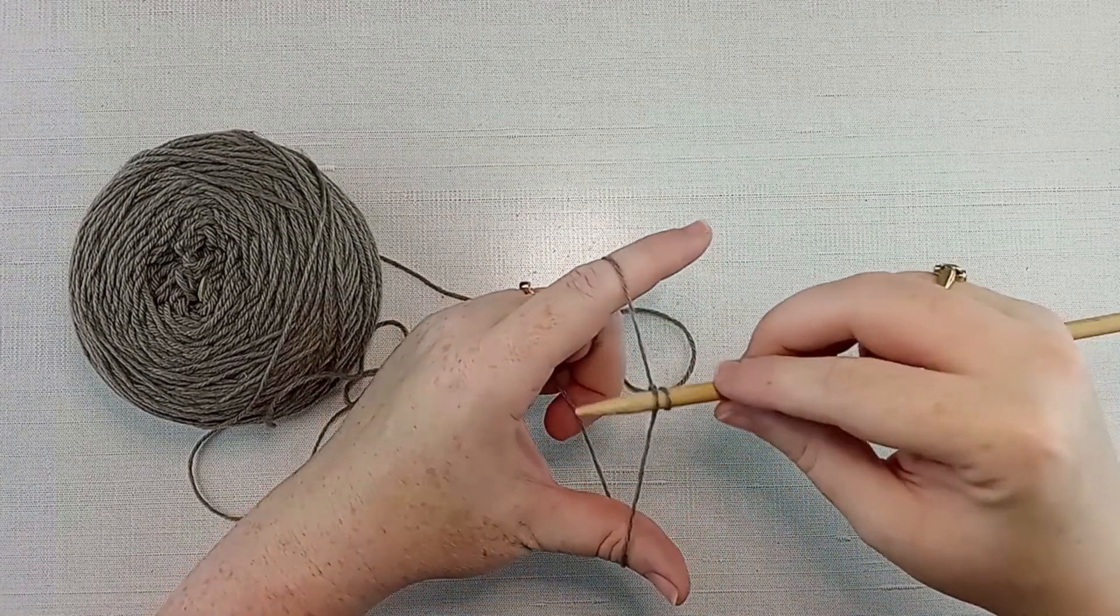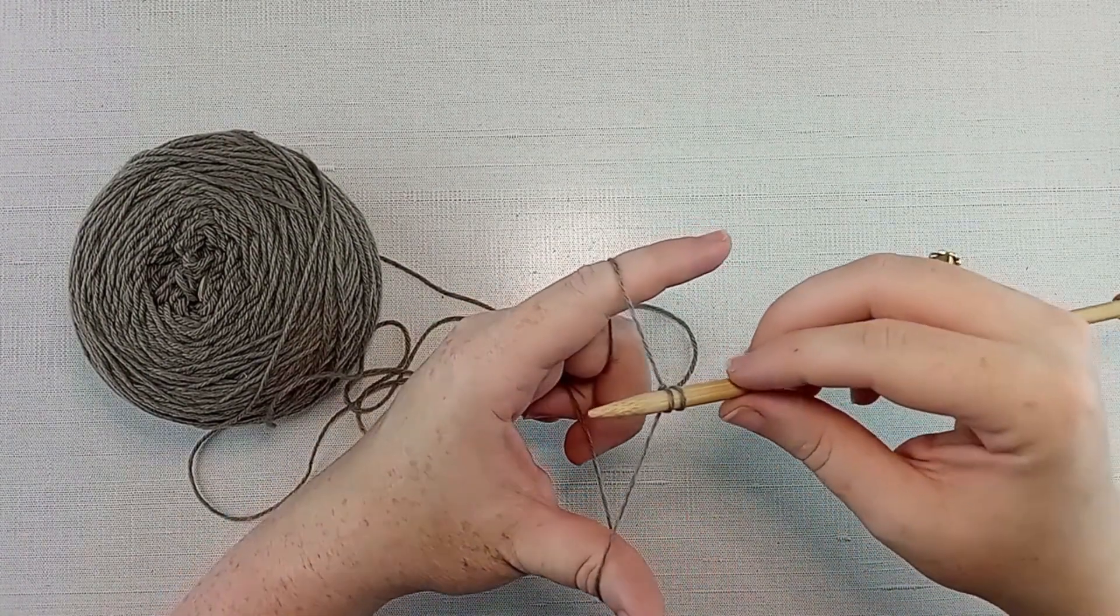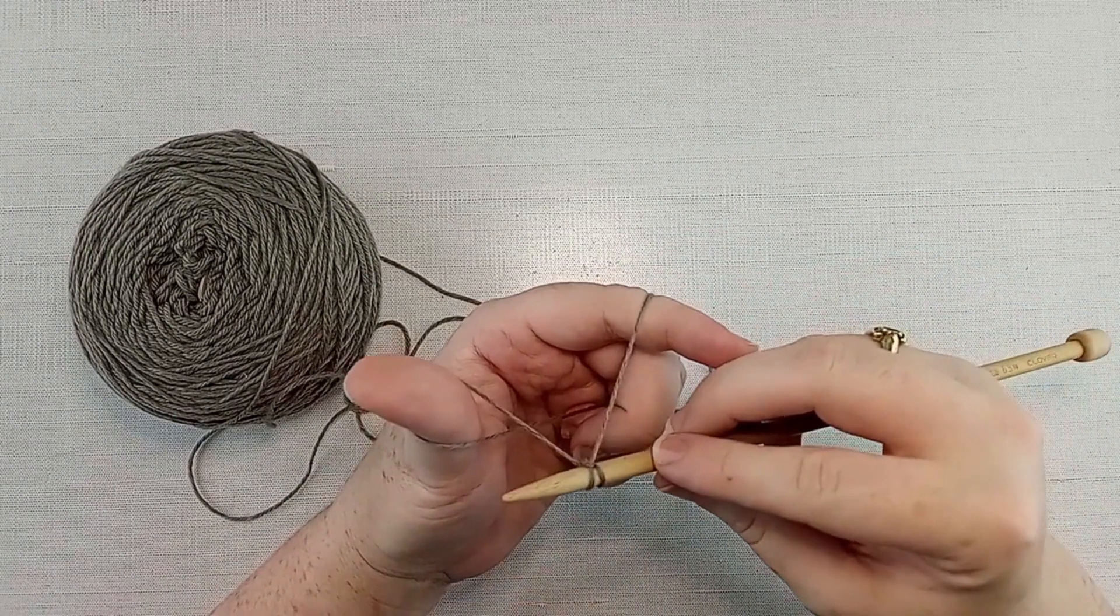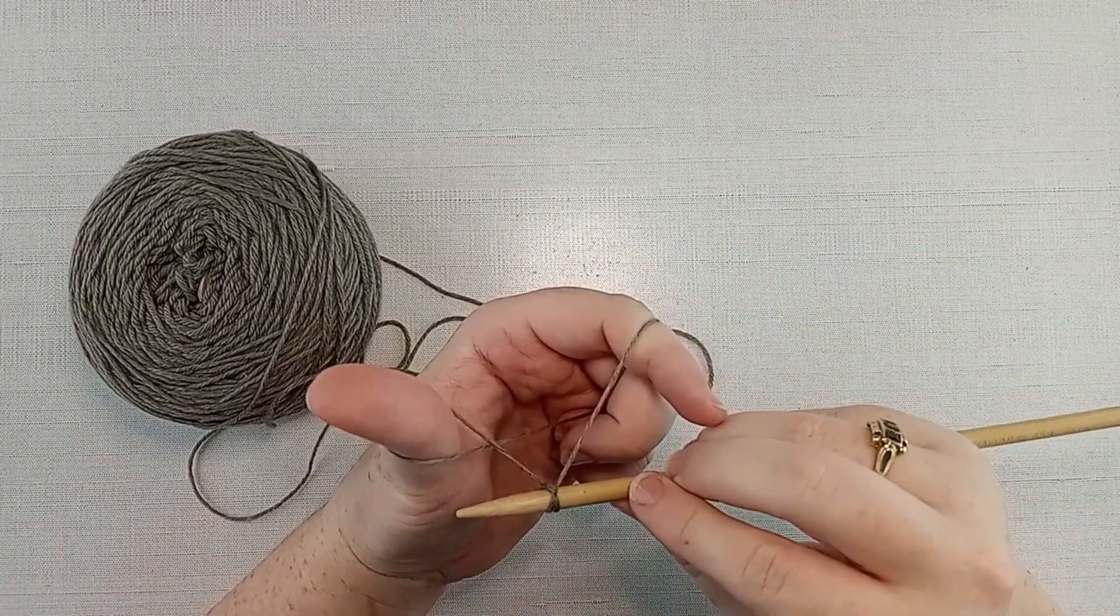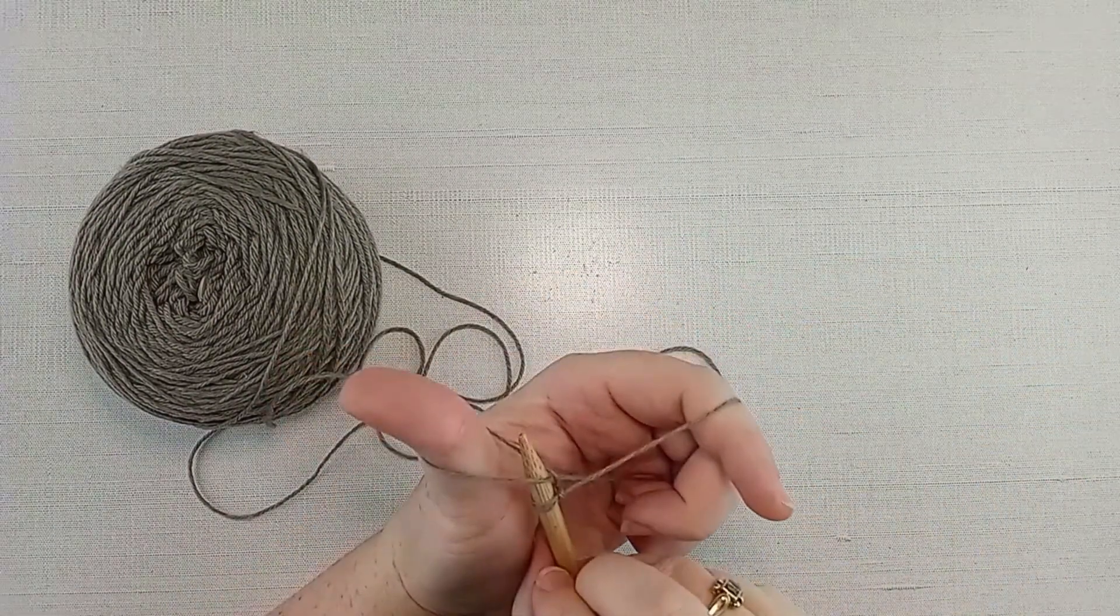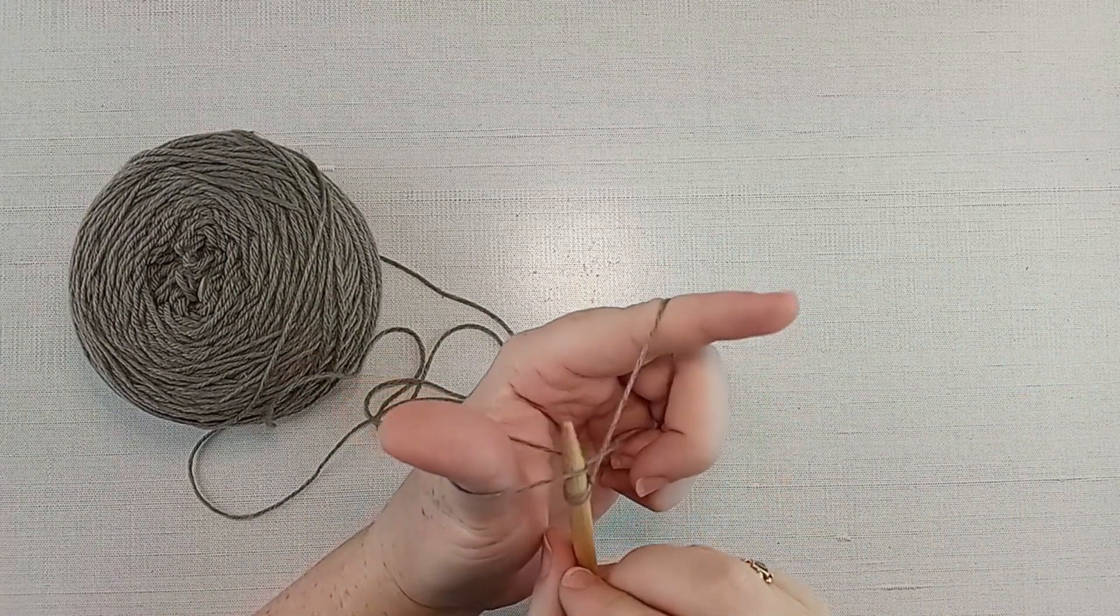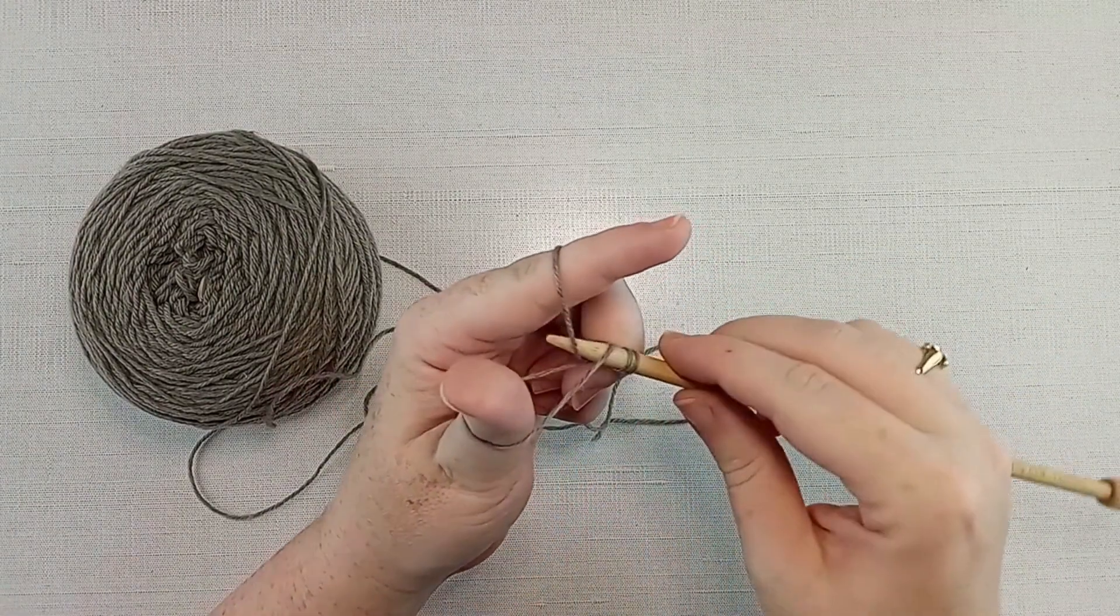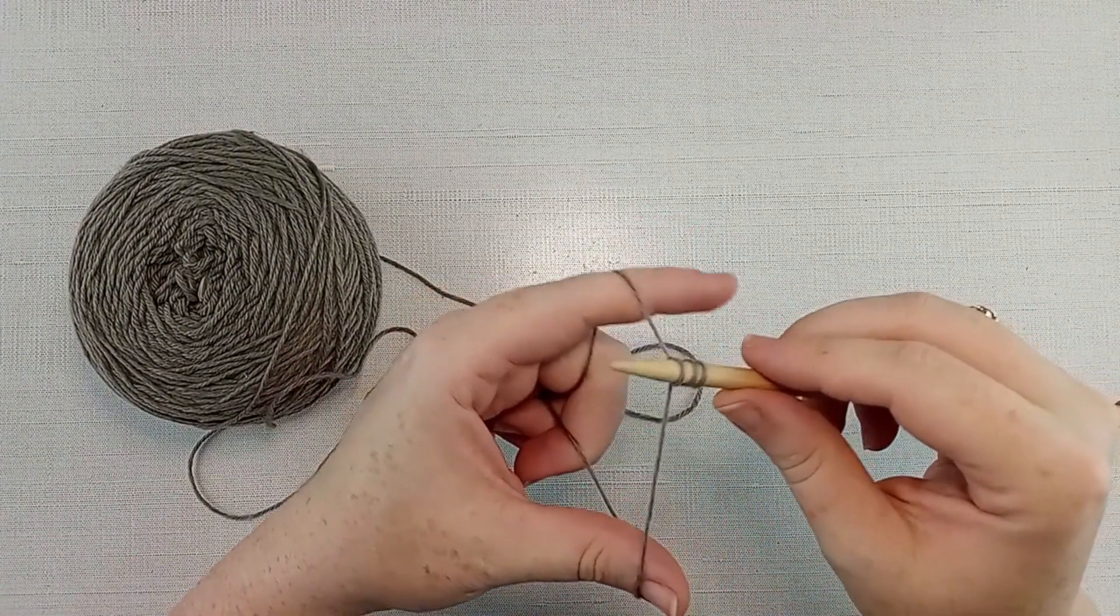So again, needle's on top of that working yarn. We're going to rotate our thumb up, bring our needle to the front, through that hole that's formed at the base of our thumb, grab that working yarn, and tighten down on the needle.